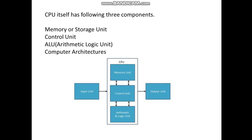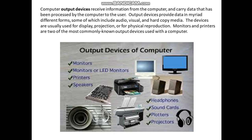Next, output devices. Computer output devices receive information from the computer and carry data that has been processed by the computer to the user. It converts the information which is in electronic form into human-readable form. Depending upon requirement, different devices are used. Different types of output devices include monitors, printers, speakers, headphones, sound cards, plotters and projectors.